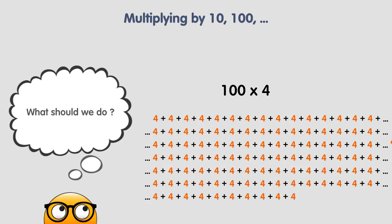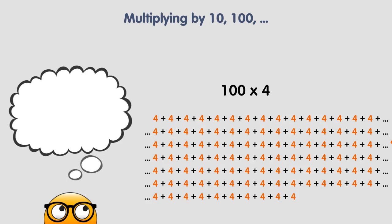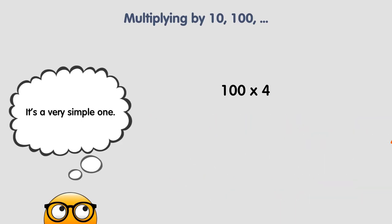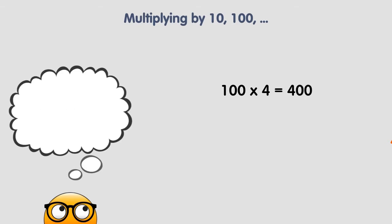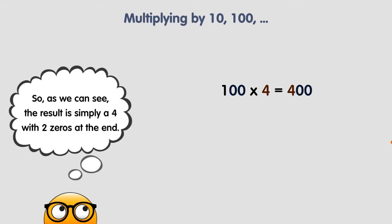What should we do? Is there an easy way to multiply 100 times 4? Yes, there is an easier way. It's a very simple one. 100 times 4 is equal to 400. The result is simply a 4 with two zeros at the end.